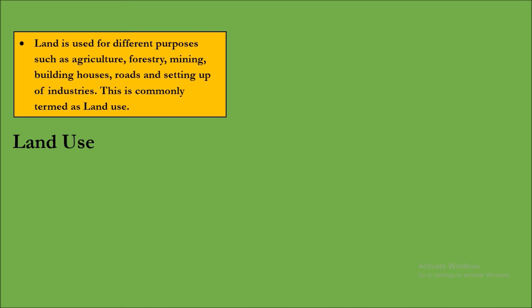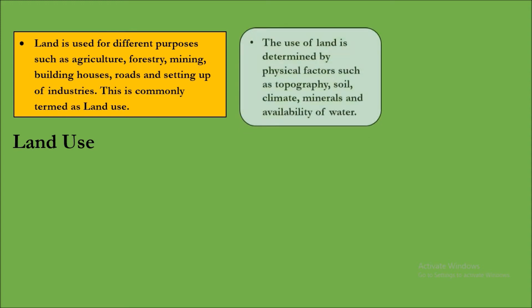Can you list out the different ways in which Mamba's and Peter's family use their land? This is a case study given in your textbook. The use of land is determined by physical factors such as topography, soil, climate, minerals, and availability of water. These five physical factors determine how land is used.